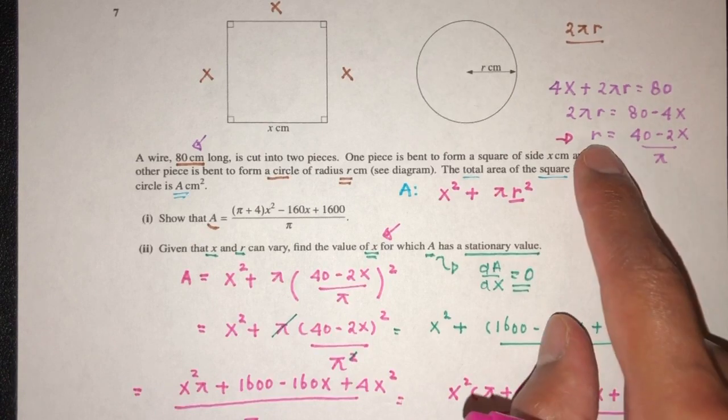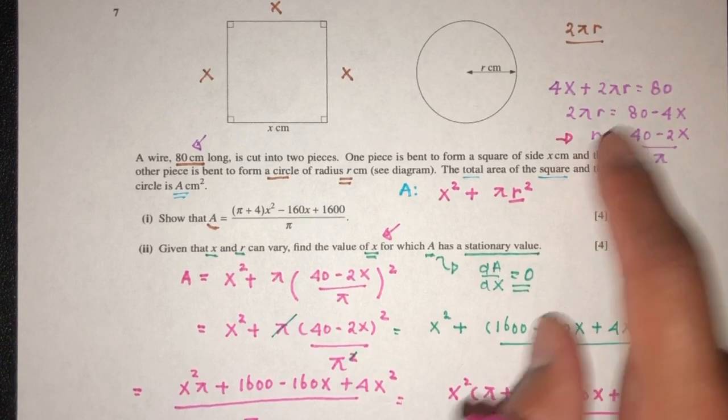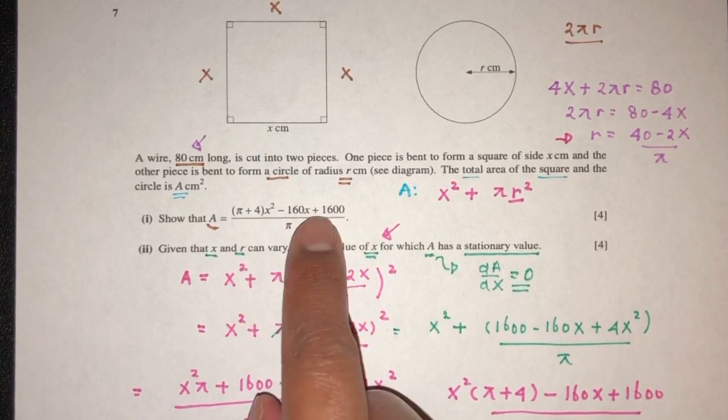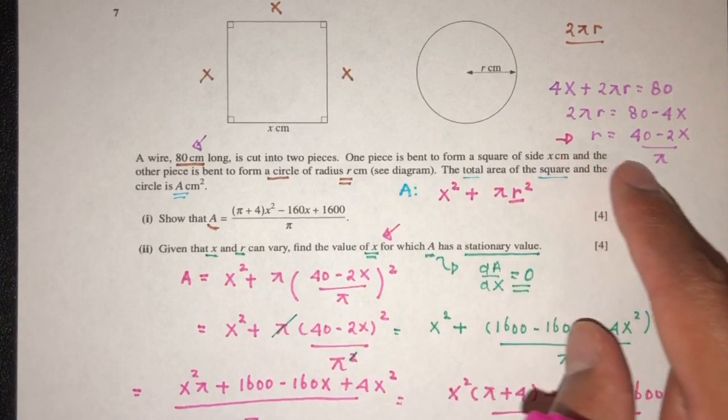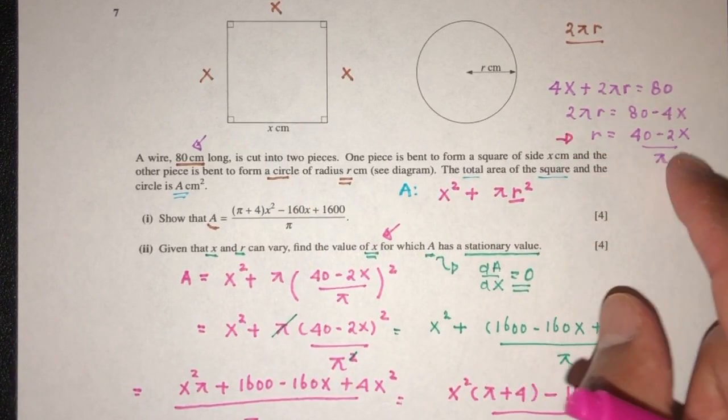Now here, how do I know I need to make r become subject? It's because in this show equation here, I don't have any r.